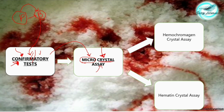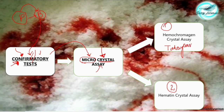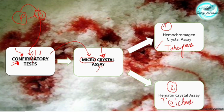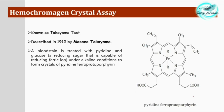There are basically two types of micro crystal assays or confirmatory tests for blood. The first is the hemochromogen crystal assay, also called the Takayama test. The second is the hematin crystal assay, also called the Teichmann test. These are names of the scientists who discovered the tests. There is often confusion between Takayama and Teichmann in objective-type exam questions, so remember them clearly.